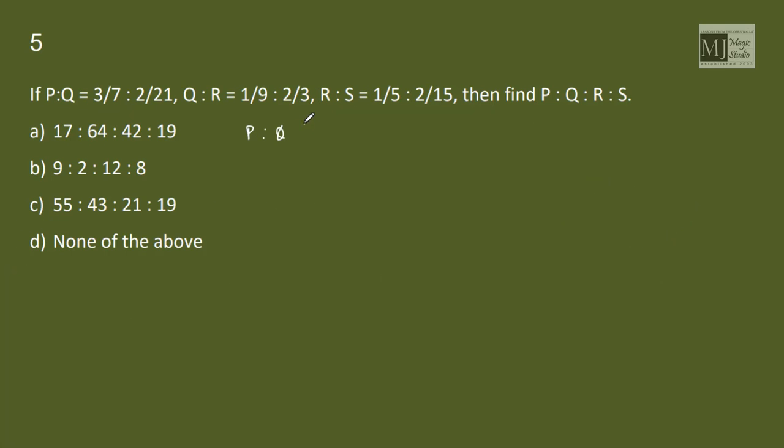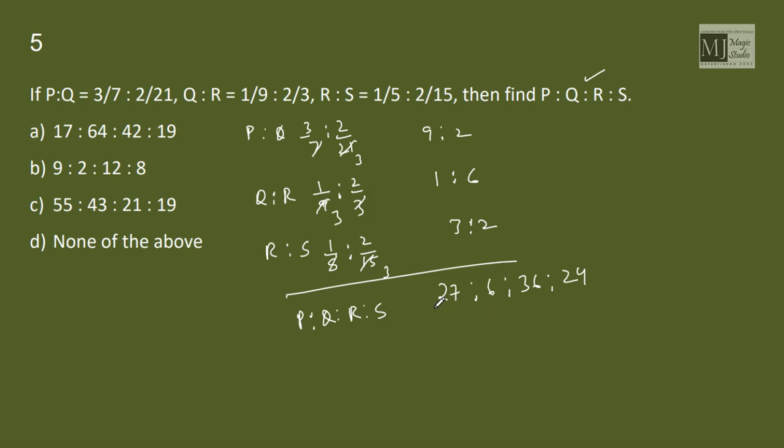P is to Q is 3 by 7 is to 2 by 21, so actually this is 9 is to 2. Q is to R is 1 by 9 is to 2 by 3, so this is 1 is to 6. R is to S is 1 by 5 is to 2 by 15, so this is 3 is to 2. Now if we combine P, Q, R, S would be 9, 2 into 1 into 3 is 6, 2 into 6, 12 into 3 is 36, 2 into 6, 12 into 2 is 24. Find the ratio of P, Q, R, S. If I divide throughout by 3, 9 is to 2 is to 12 is to 8. Option B fits in.